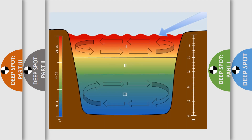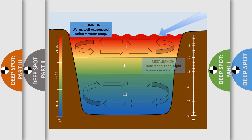Samples are collected from the middle of each thermal layer at the deep spot. Thermal layers are determined by conducting a temperature profile. Stratified lakes have three layers called the epilimnion, the metalimnion, and the hypolimnion. Unstratified lakes are shallower and have either one or two layers. Samples are collected from the middle of each thermal layer for stratified lakes. For unstratified lakes, samples are collected from the middle of the epilimnion.